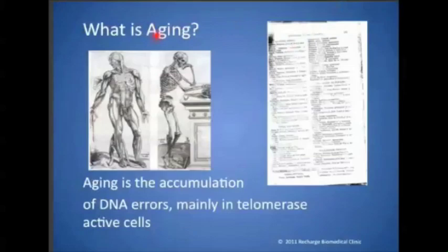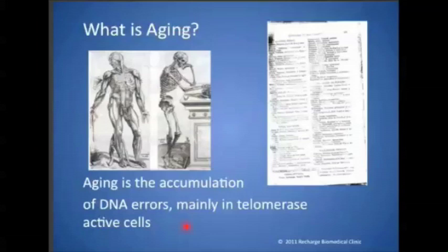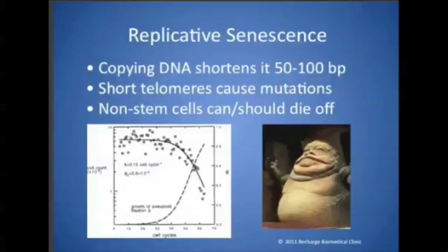Aging, in my opinion, is the accumulation of DNA errors mainly in telomerase-active cells. These are errors — not necessarily damage, though oxidative stress or ultraviolet radiation are great ways to cause errors. The most common cause is simply dividing the cell over and over again. A run-of-the-mill cell can only be divided about 60 times before it goes into oblivion.